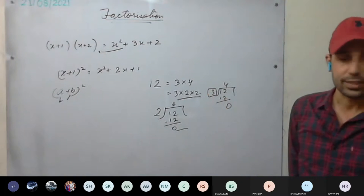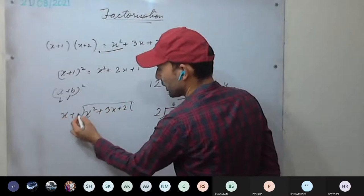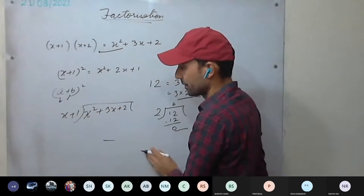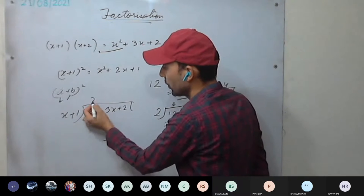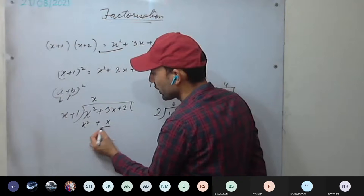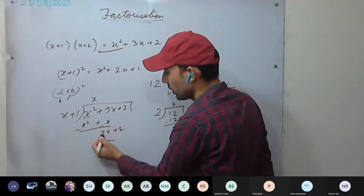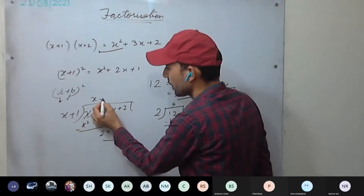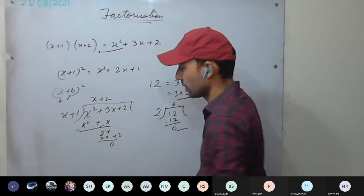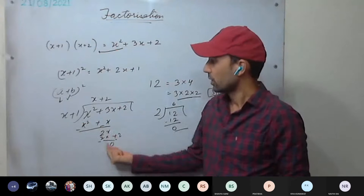Similarly, if you divide x² + 3x + 2 by (x+1), these are nothing but numbers. The remainder you're going to get is zero. You can check: x into x gives x², then 1 into x plus x... the remainder becomes zero. Three x minus x is 2x, plus 2... then x into 2 is 2x, 1 into 2 is plus 2, so remainder is zero. Dividing a polynomial by a factor always gives remainder zero.